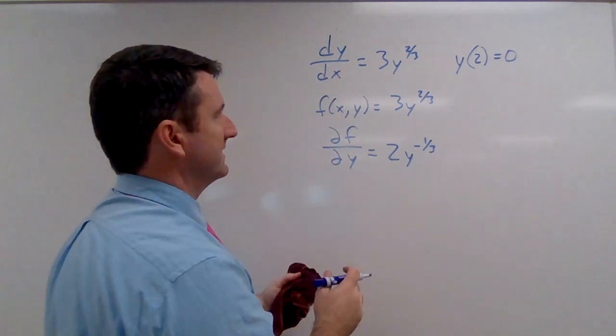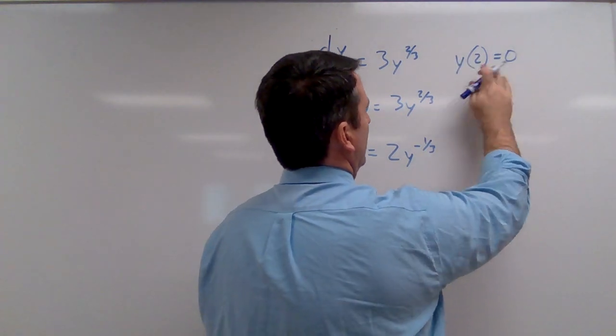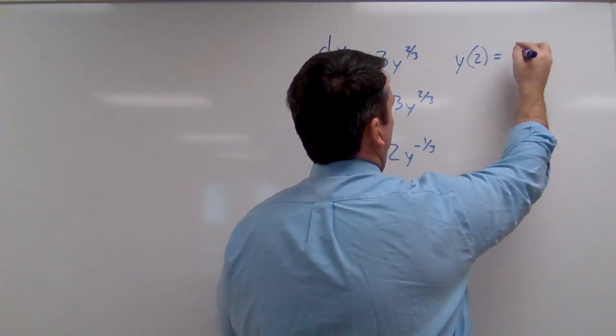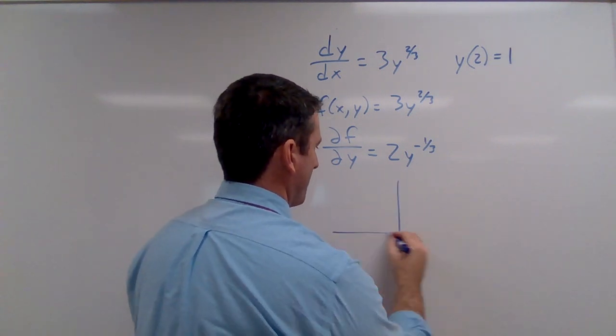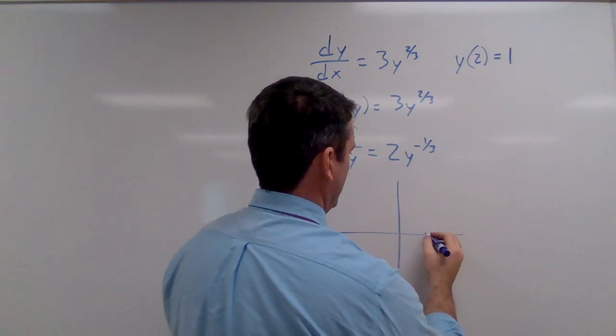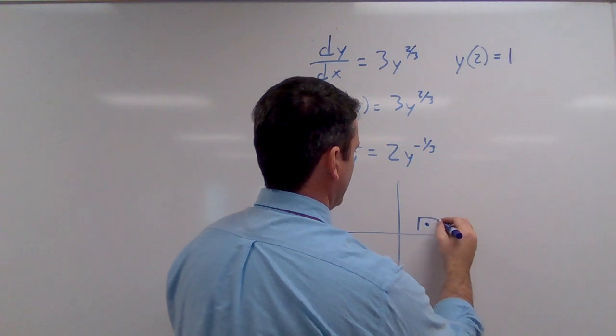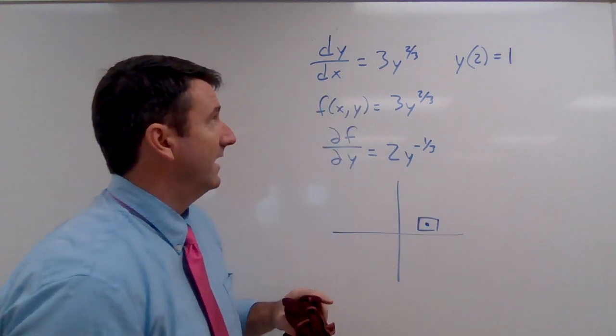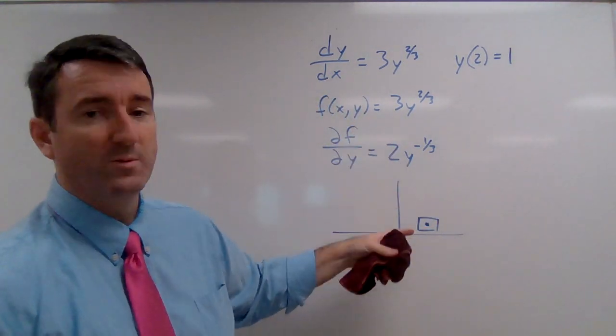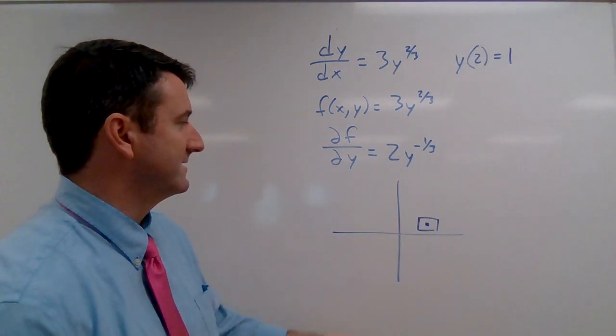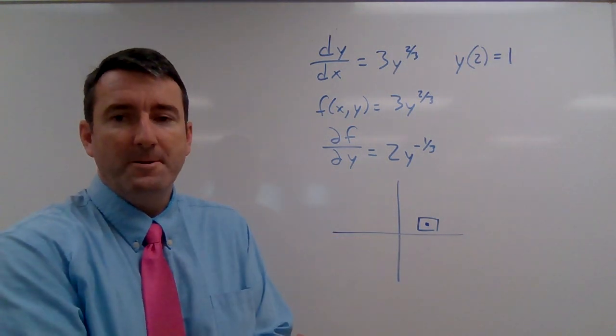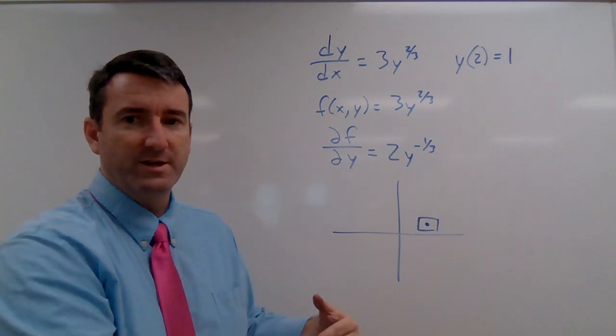One more thing I wanted to note about this is that if this were y of two equals one, say, now we could draw a rectangle around this point, to one, where these would be continuous, just as long as we didn't get down to the x-axis. So that would imply a unique solution over some interval.